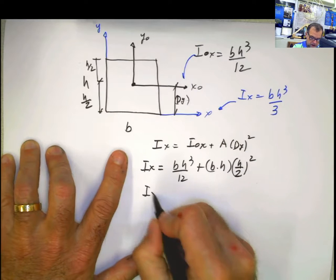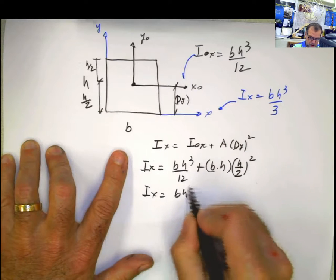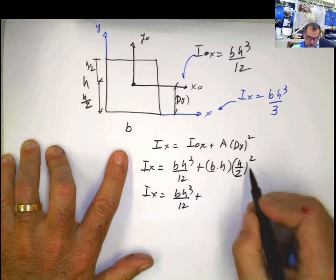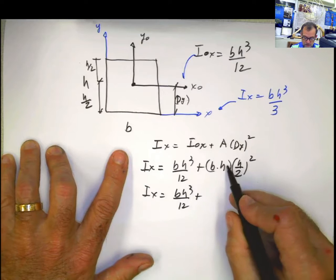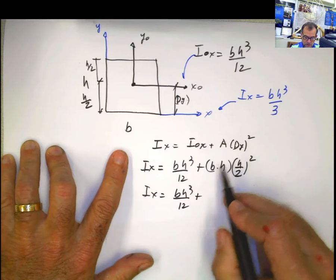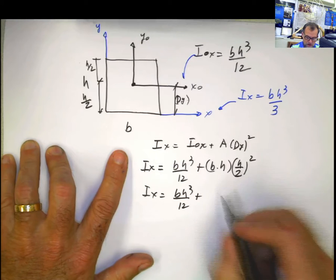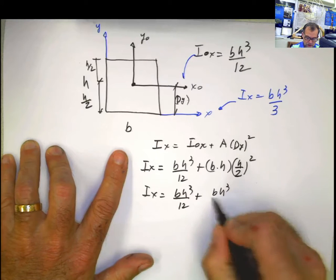That's the area, multiplied by the distance in y, which is h divided by 2 squared. Solving for it, Ix equals bh cubed divided by 12, plus this is h squared times h is h cubed, bh cubed. 2 squared is 4, bh cubed divided by 4.